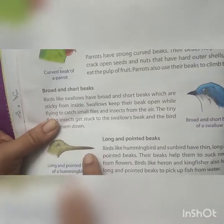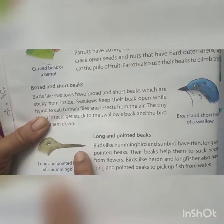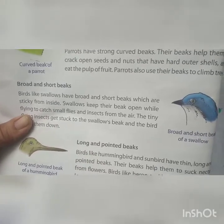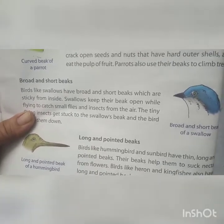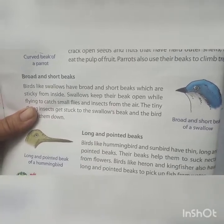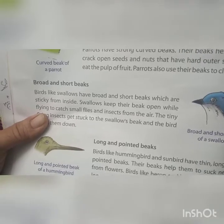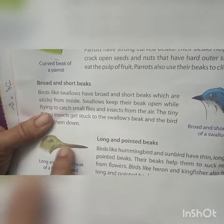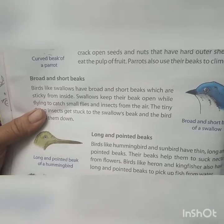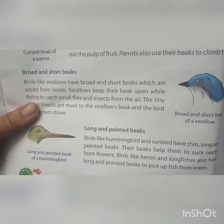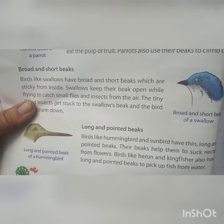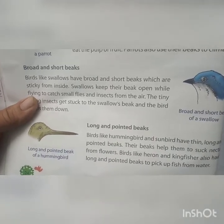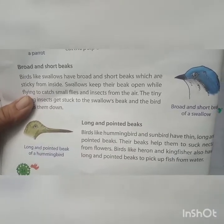The hummingbird has long and pointed beaks. The kingfisher and heron also have this type of beak because it helps them to suck the nectar. For kingfisher, as they pick up fishes from water, they have this type of pointed beak.